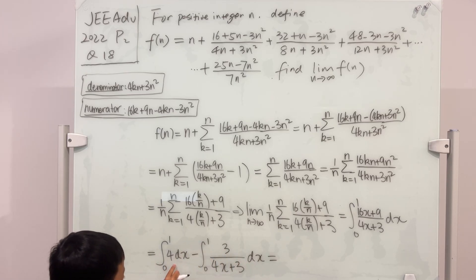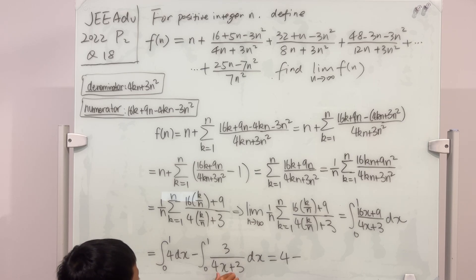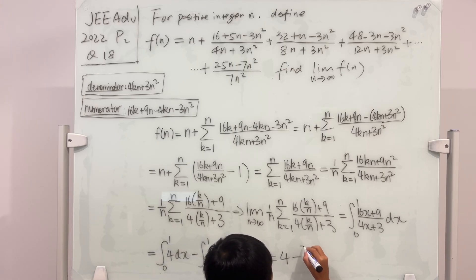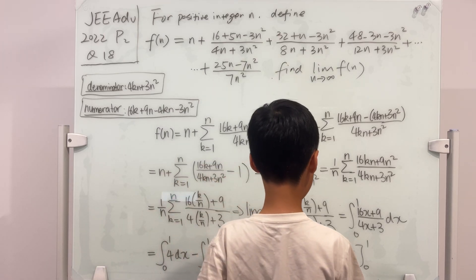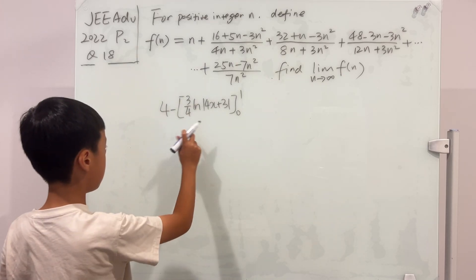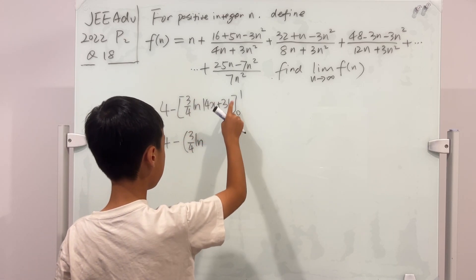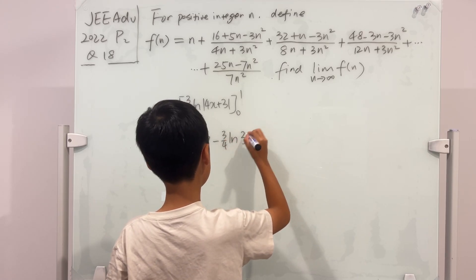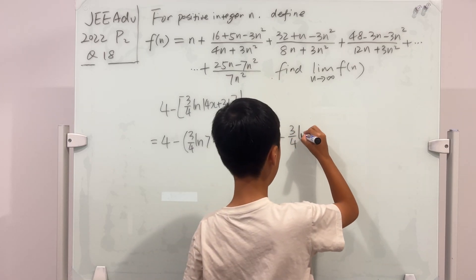And this is equal to, if you do this on your own, then this will be 4. And this will be, you can also do this on your own and figure out that it will be 3 over 4, oh, don't forget the plugging in, times ln of 4x + 3. And of course we have to go from 0 to 1. Well, I have to rub everything out now. So this is equal to 4 minus, if we plug in 1, then it will be 3 over 4 ln of 7. And then minus, if we plug in 0, then we'll get 3 over 4 ln of 3. And we can factor out 3 over 4, so it's 4 minus 3 over 4 ln of 7 over 3.